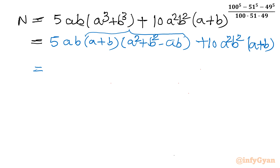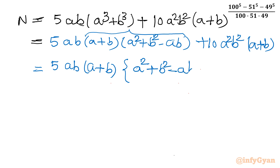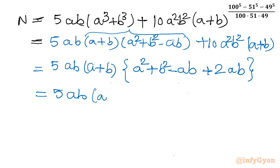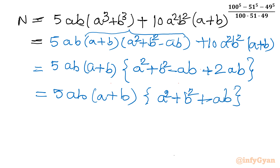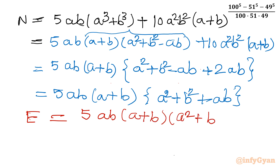Now you can see AB is common, A plus B is also common, and 5 is also common. So let us take 5AB times A plus B out as a common factor. What will be left is: A square plus B square minus AB, and then twice AB will be left, giving plus 3AB. So the numerator N equals 5AB times A plus B times A square plus B square plus AB.